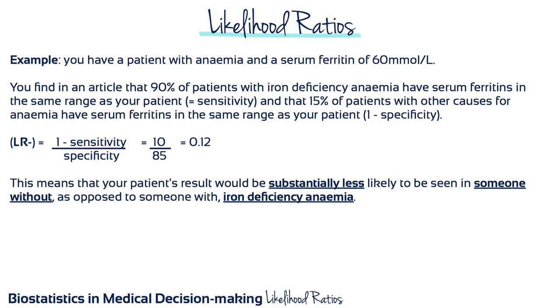There's nothing to stop you from calculating the negative likelihood ratio instead. So if we stick with the same example, a negative likelihood ratio value of 0.12 means that your patient's result would be substantially less likely to be seen in someone without, as opposed to someone with, iron deficiency anemia. This is essentially saying the same thing as the positive likelihood ratio value, but from the opposite perspective.